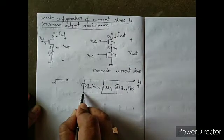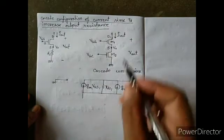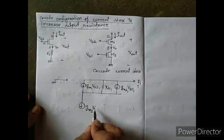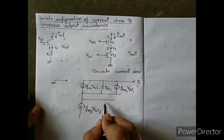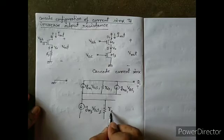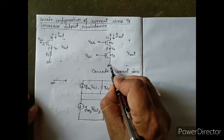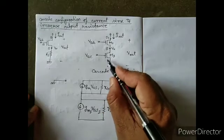The source terminal of M1 is connected to the drain terminal of M2. Now M2 can be replaced with its equivalent circuit having a dependent current source gm2·Vgs2 and a resistance rds2. Since the source terminal of M2 is directly connected to ground, no body effect will appear for M2, so there is no Gmb2·Vbs2 term.